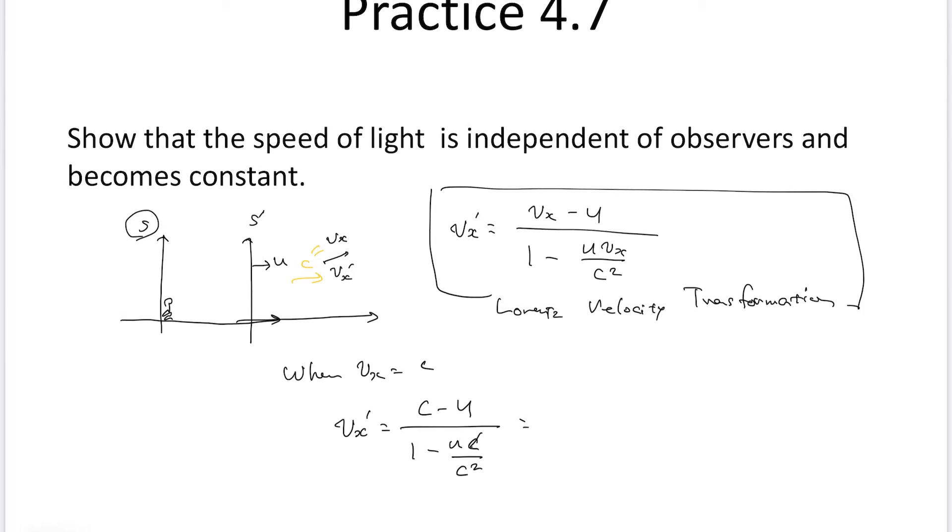Then one of the c's is going to be cancelled out. So c minus U over c minus U over c. So it becomes c. So Vx' is also c.